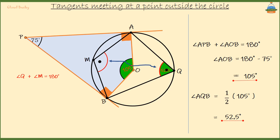That is to say, AMB is equal to 180 minus 52.5. That is equal to 127.5 degrees.